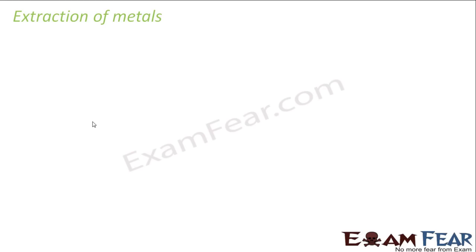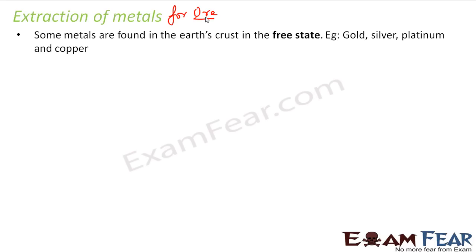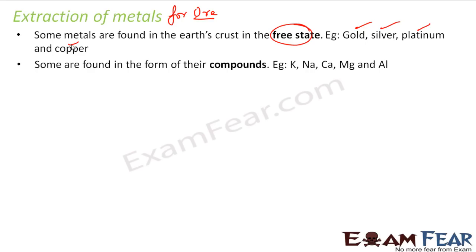We know we have ores and we need to extract metal from them. Some metals are found in free state — for example, gold, silver, platinum, and copper. They are not very reactive, so they are found in free state. You don't have to do much chemical reaction; you just grab the gold, clean the mud, and enjoy.